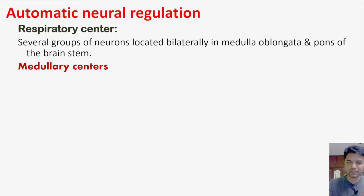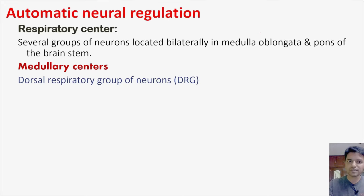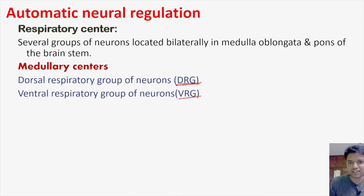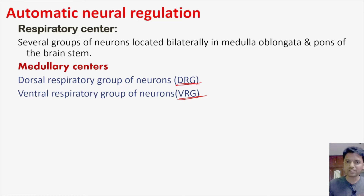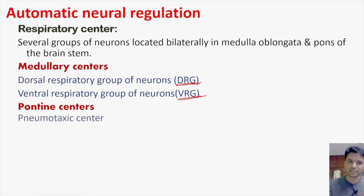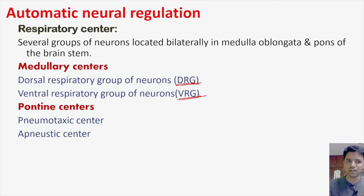The two groups in the medulla are: the dorsal respiratory group of neurons, designated DRG, and the ventral respiratory group of neurons, designated VRG. In the pons, there are also two centers: one is called the pneumotaxic center and another is called the apneustic center. Very important to remember all four: DRG and VRG in the medulla; pneumotaxic center and apneustic center in the pons.